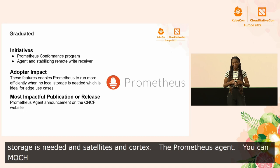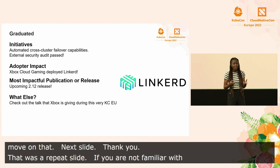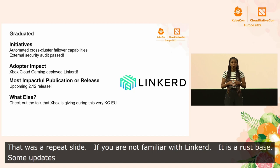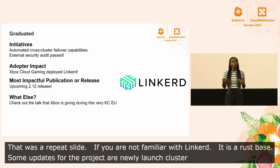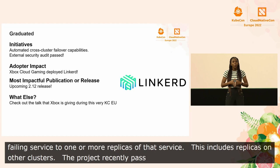Linkerd is the fastest, lightest, and simplest service mesh for Kubernetes, powered by a unique Rust-based microproxy. Updates include the newly launched cross-cluster failover feature, which gives Linkerd the ability to automatically redirect all traffic from a failing or inaccessible service to one or more replicas of that service, including replicas on other clusters. The project also recently passed an external security audit — congrats to the team. We encourage you to check out the talk that Xbox is giving at this very KubeCon.